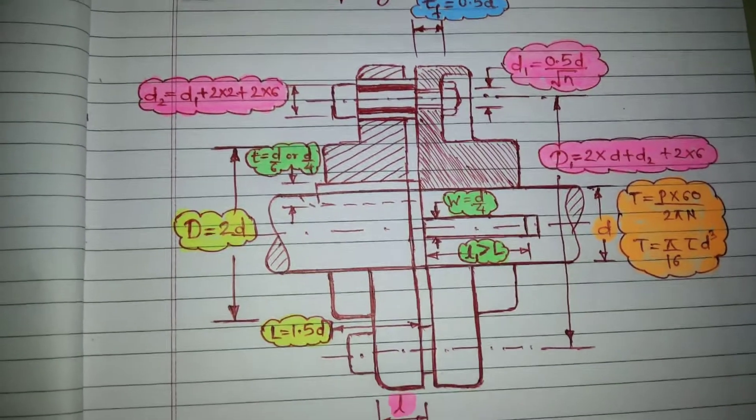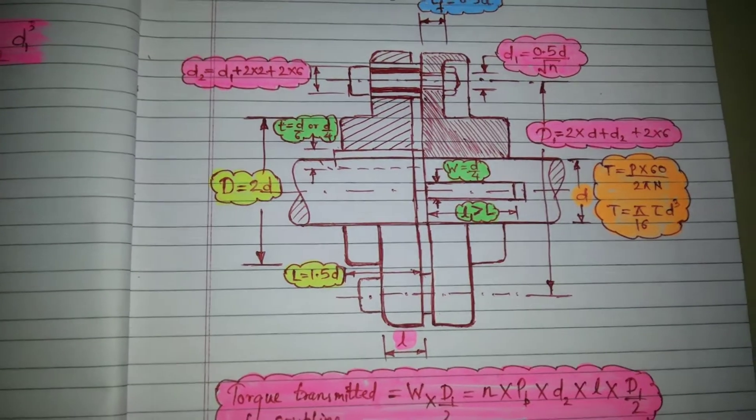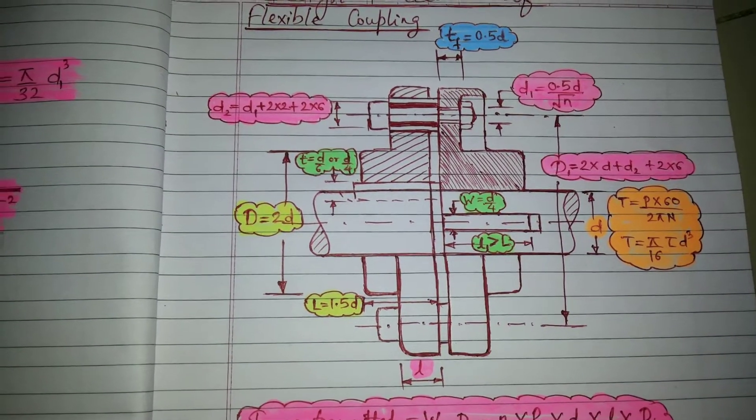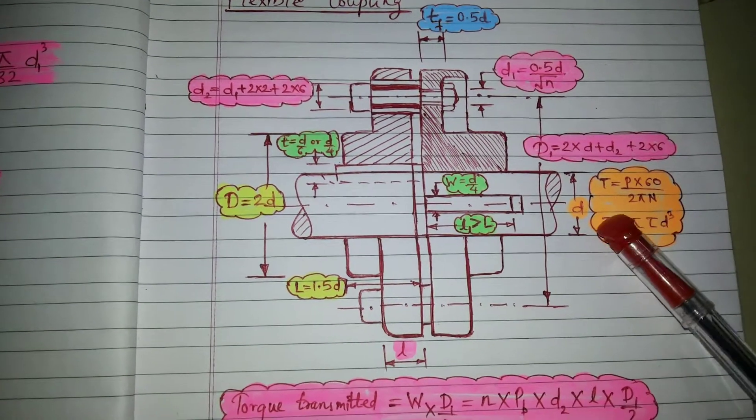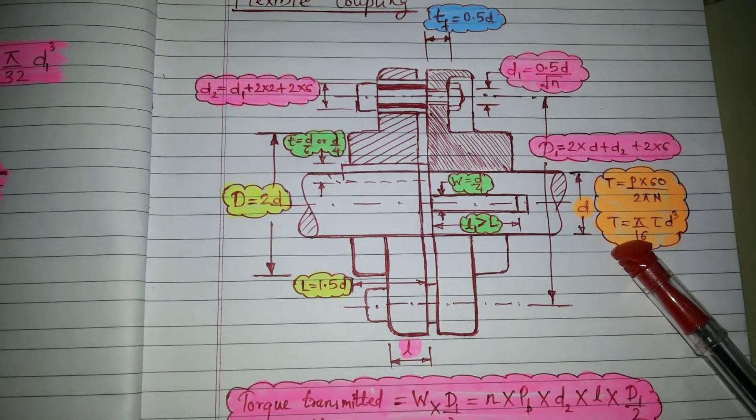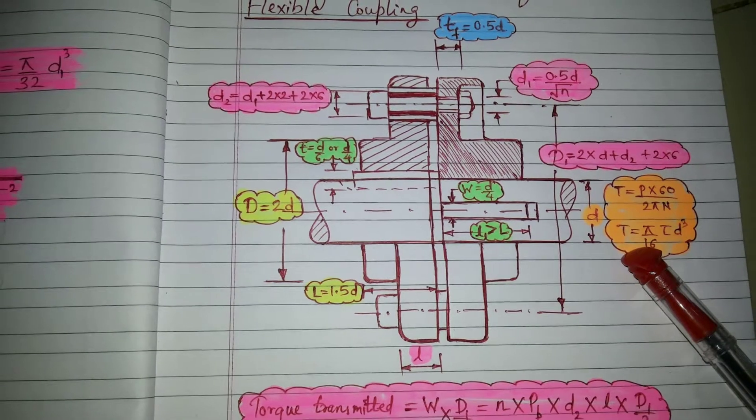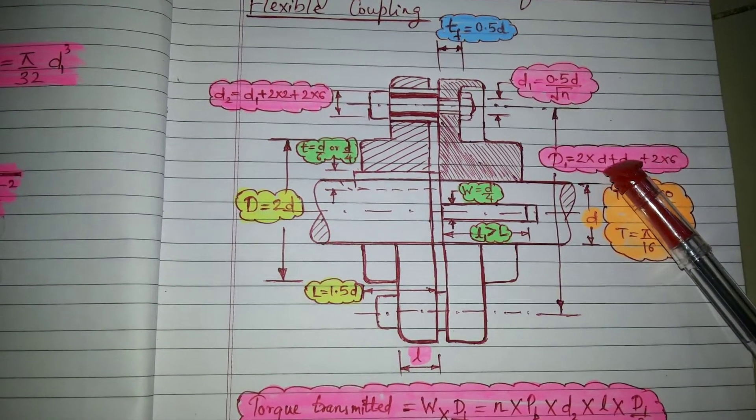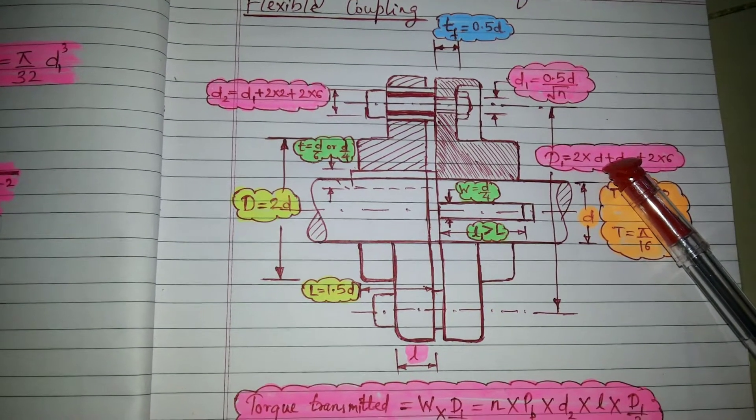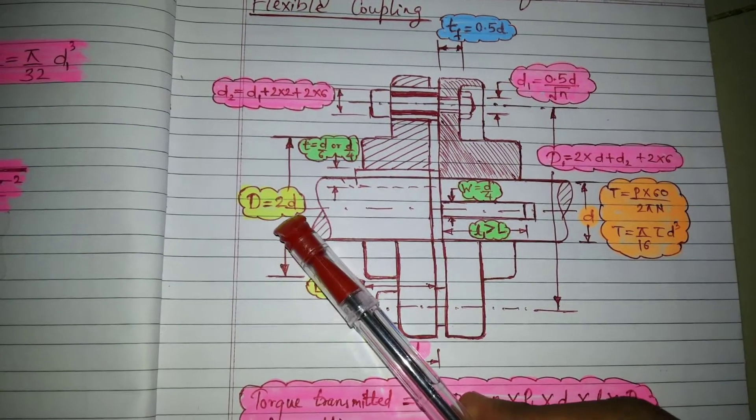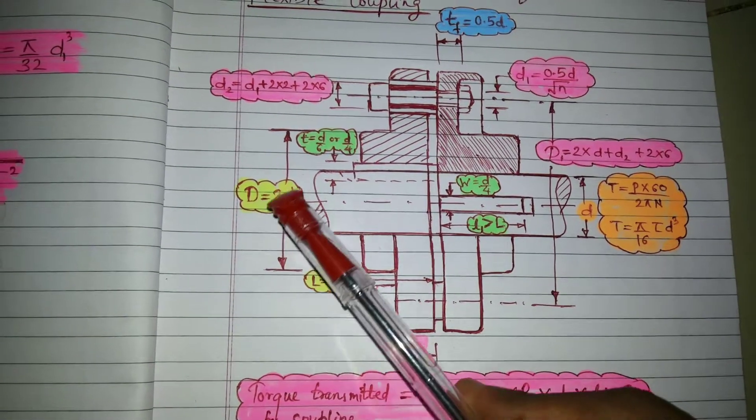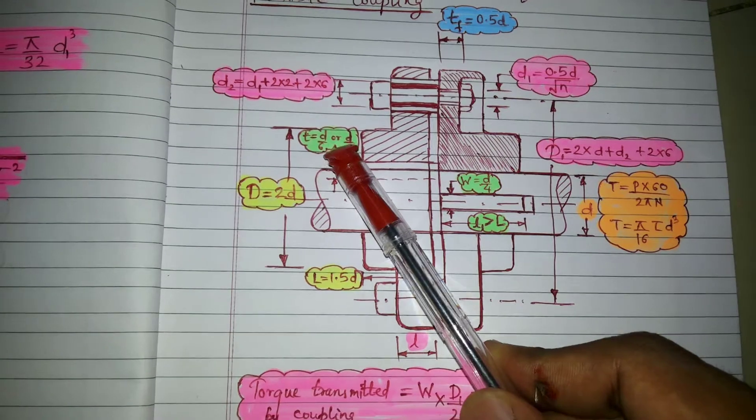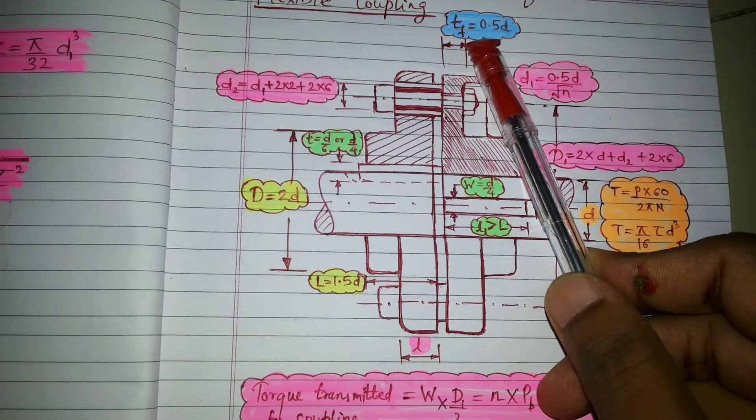As you can see, what I have done, all the steps I have marked with different colors so that you can remember all the steps and reproduce the same during examination. I have used orange color for the first step and I have used pink color for step number two and yellow for step number three and green for step number four and blue for step number five.